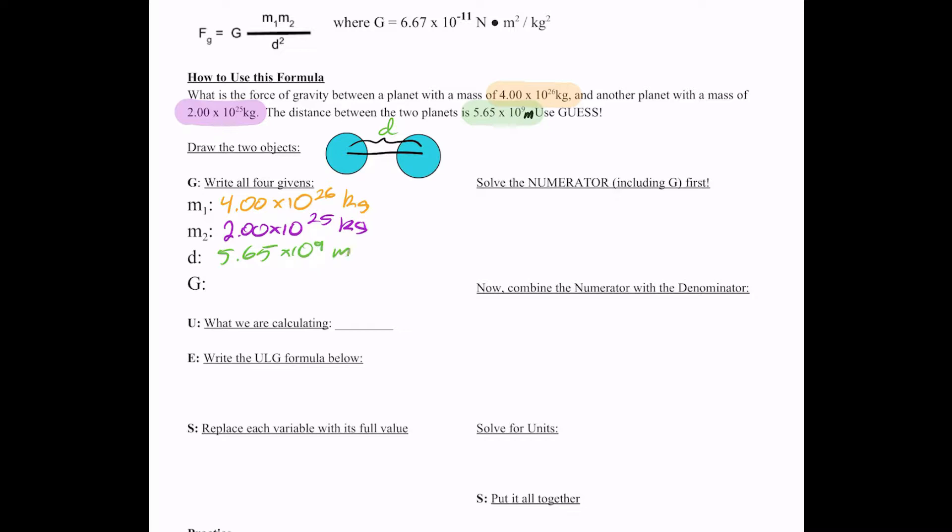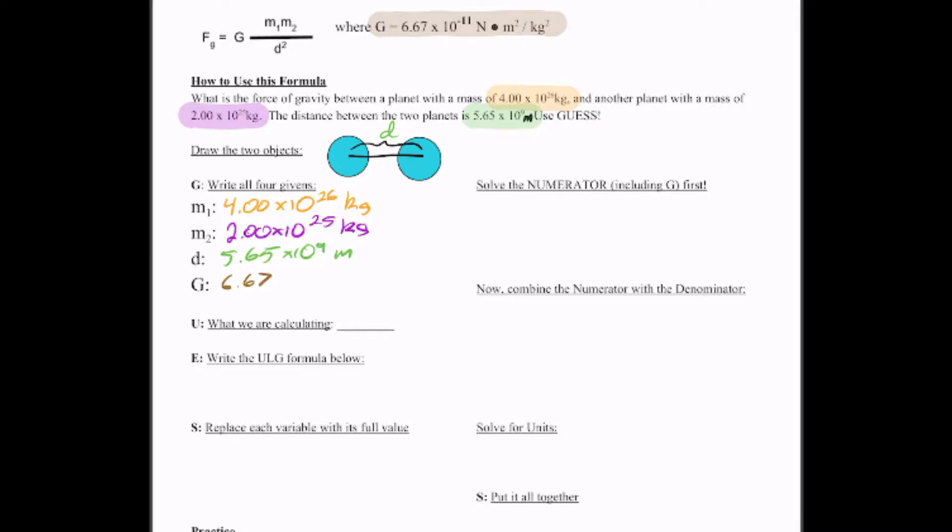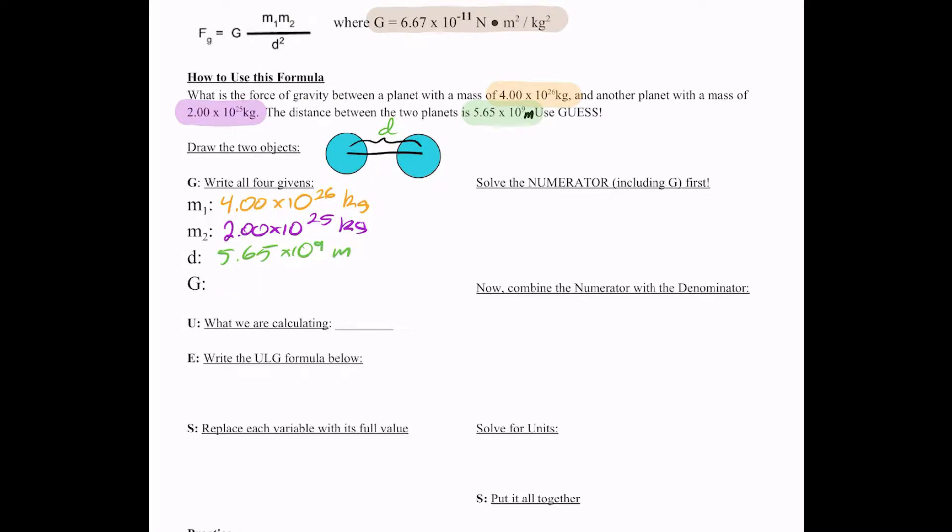And what's G, everyone? Our gravitational constant. It's at the top of your paper. Yeah, 6.67 times 10 to the negative 11th newton meters squared over kilograms squared. That is a constant, so that's always going to be the same number.